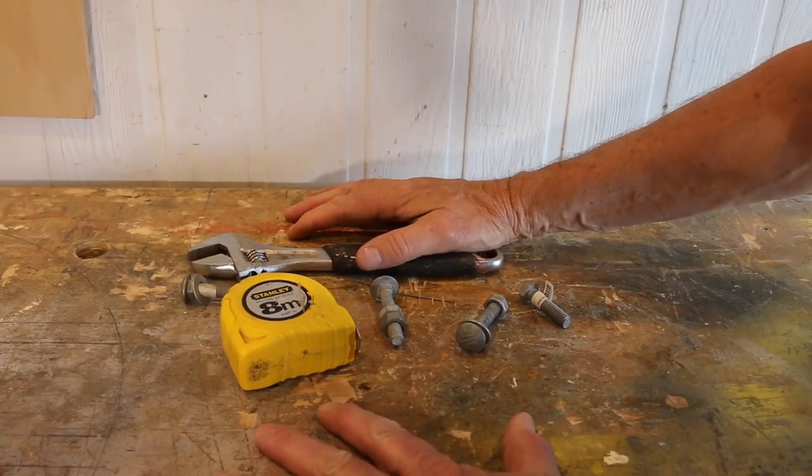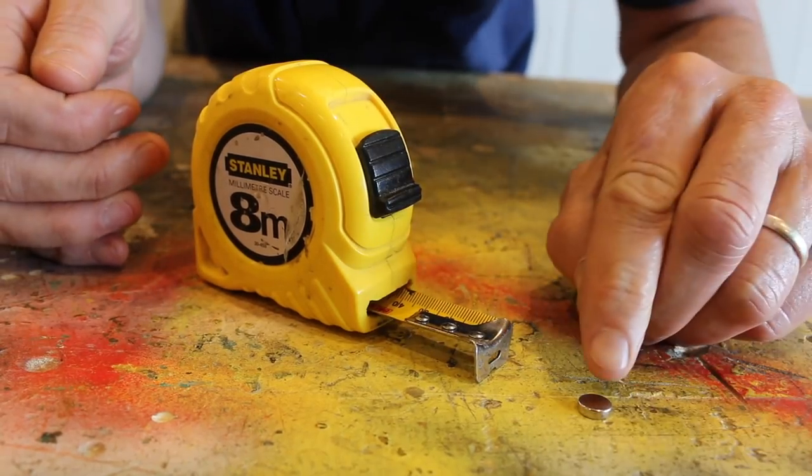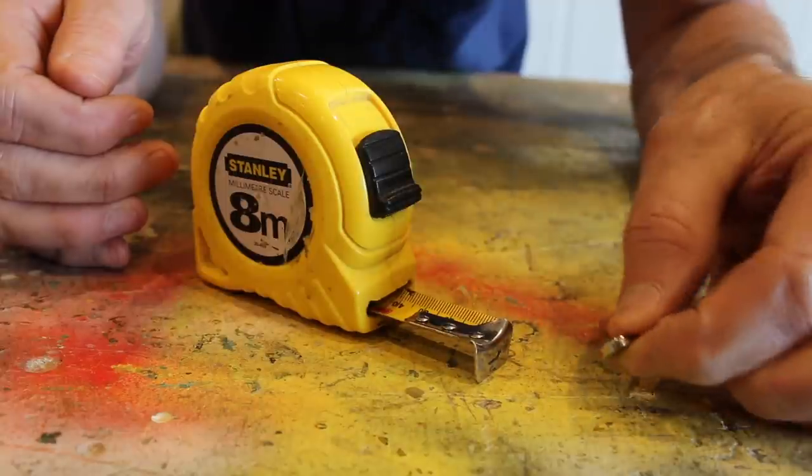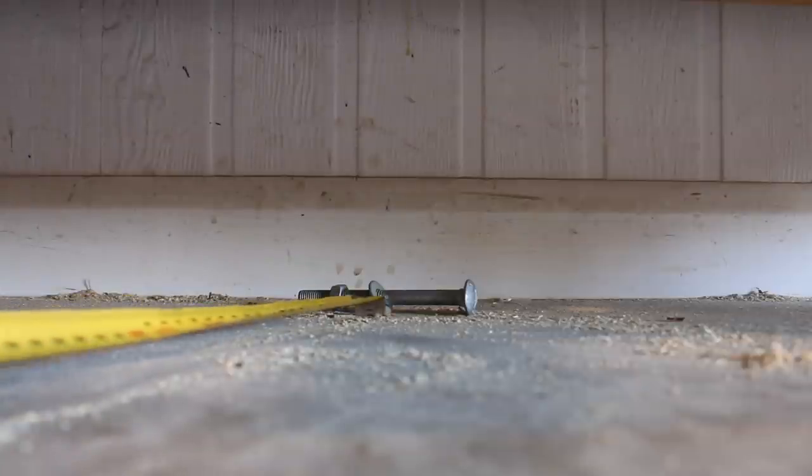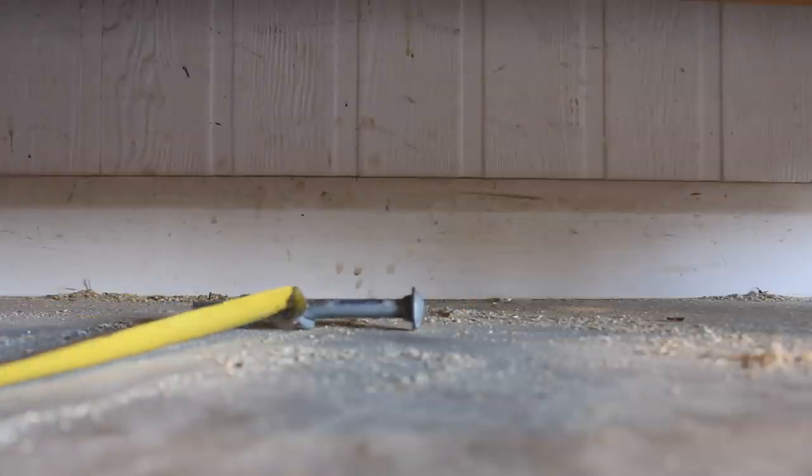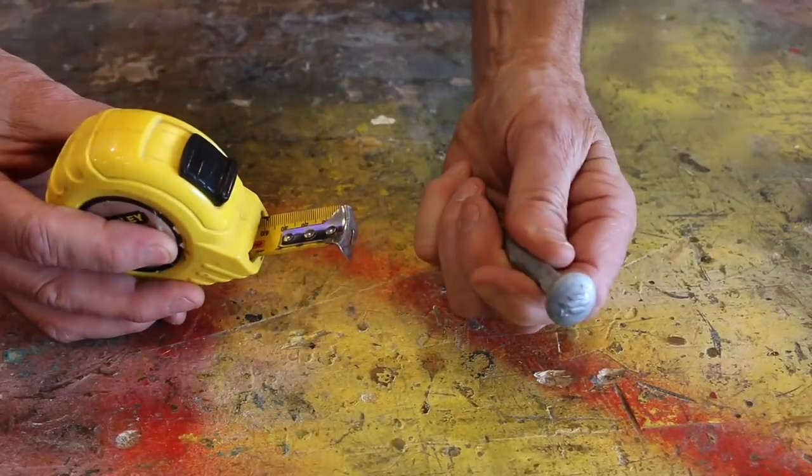Now this next one isn't exactly a measuring hack per se, but it is a great use of a tape measure. Now we've all done this, but accidentally dropping or knocking an object into a hard to reach place can be a real pain, especially for old blokes like me, with a crook back and dicky knees. Now to help retrieve that dropped object, just grab yourself a magnet like I have here, and place that on the end of your tape. Then all you need to do is extend your tape measure, and retrieve the dropped object. Too easy. Great tip, knackers!